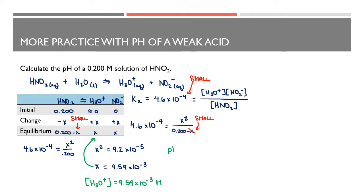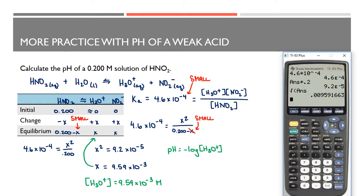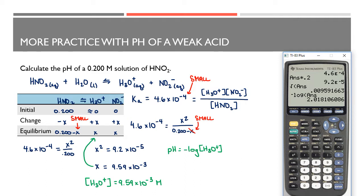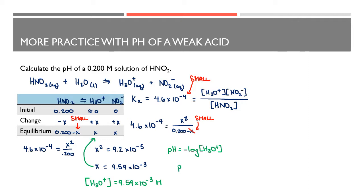It just so happens that the hydronium concentration equals x, so the hydronium concentration is 9.59 × 10⁻³ moles per liter. That is the value I use to calculate pH — I'm really only interested in this hydronium concentration because it's the one that allows me to calculate pH. The negative log of this concentration is 2.02, rounded to three significant digits. So the pH is 2.02.